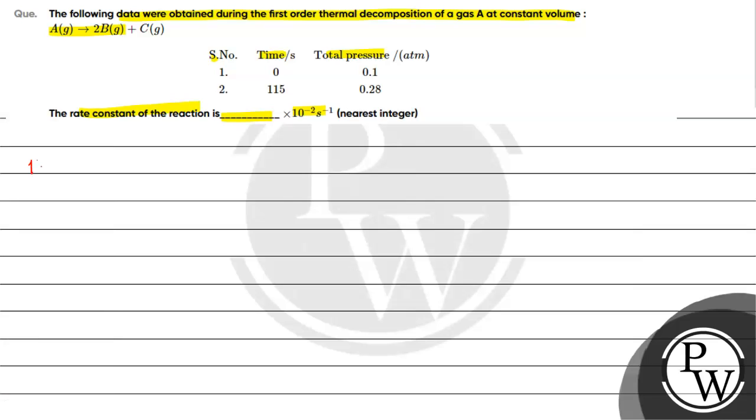The key concept for this question is first-order reaction kinetics. What is the reaction? We have A(g) → 2B(g) + C(g).